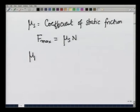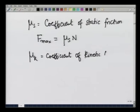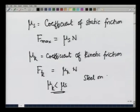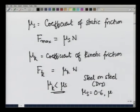Once the body starts moving, the kinetic friction equals mu_k times N. From the graph, mu_k is slightly lower than mu_s. For example, for steel on steel (dry friction), mu_s is about 0.6 and mu_k is 0.4. One important thing about friction is that it is independent of the area of contact.